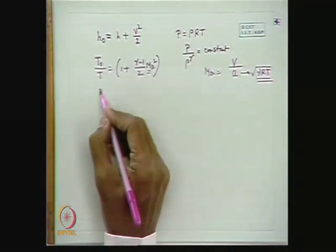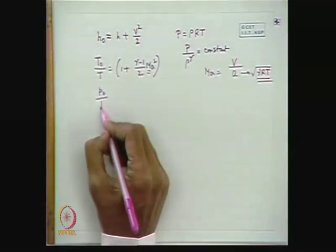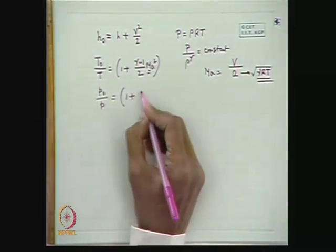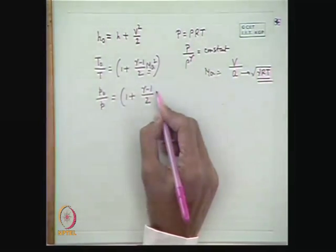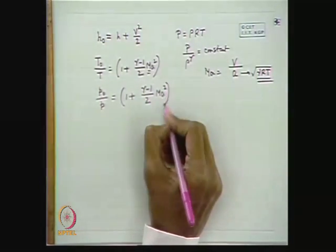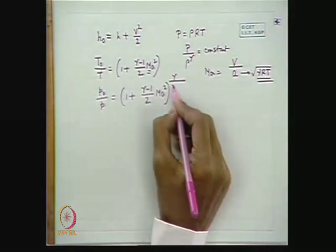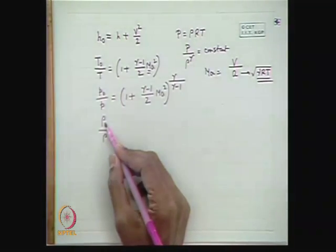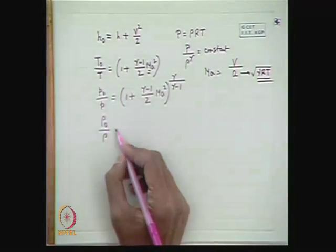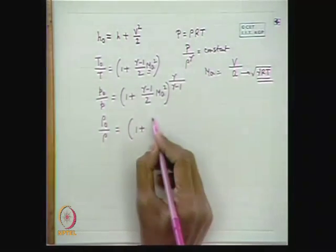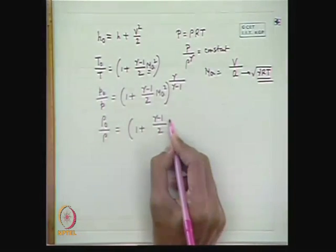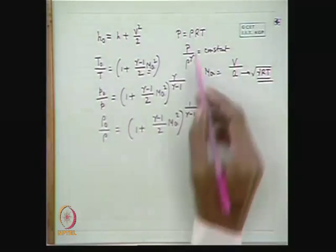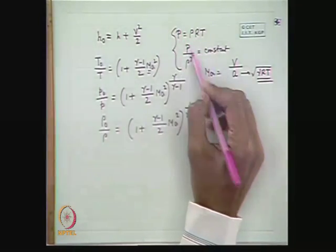Similarly, for a perfect gas, the ratio of stagnation pressure to local pressure is P₀/P = [1 + (γ-1)/2 · M²]^(γ/(γ-1)), and the ratio of stagnation density to local density is ρ₀/ρ = [1 + (γ-1)/2 · M²]^(1/(γ-1)). These have been derived using the ideal gas equation and isentropic process relation.